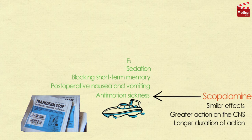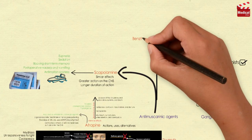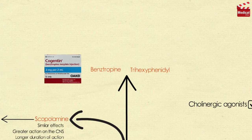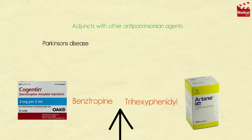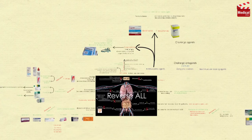Scopolamine produces sedation, but at higher doses it can produce excitement; it may also produce euphoria and is susceptible to abuse. Benztropine and trihexyphenidyl, known commercially as Cogentin and Artane respectively, are useful as adjuncts with other antiparkinsonian agents to treat Parkinson's disease and other types of parkinsonian syndromes, including antipsychotic-induced extrapyramidal symptoms.